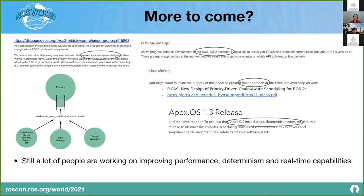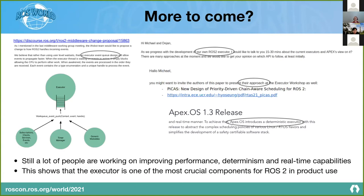You can see that a lot of people are still working on improving performance, determinism, and real-time capabilities for ROS 2 execution. This also shows that the executor is one of the most crucial components when it comes to using ROS 2 for production.